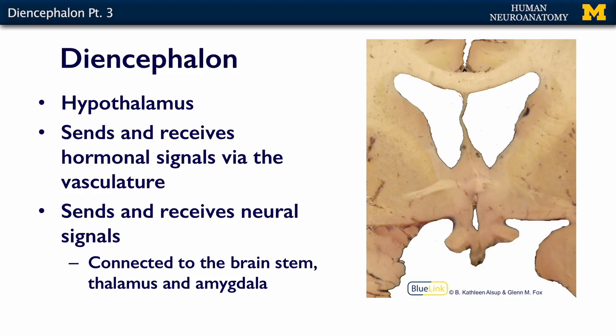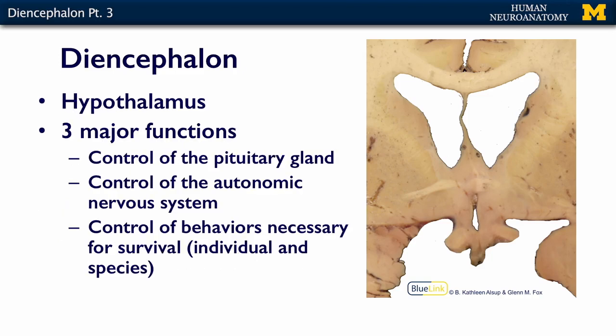It is also connected to the brain stem, the thalamus, and the amygdala. The hypothalamus has three main functions: it controls the pituitary gland, both anterior and posterior; it's the main control center for your autonomic nervous system; and it controls behaviors necessary for survival — not just your survival, but the survival of the species. Every animal that has a hypothalamus has basic behaviors driven by it that keep that animal and its species alive. In the next set of slides, we'll talk about more details about each one of these specific functions.